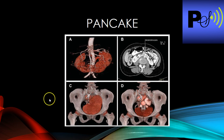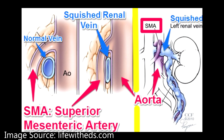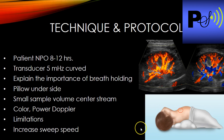The indications for the exam include hypertension — renal vascular hypertension being number one — abdominal bruit heard on physical exam, known renal artery stenosis for follow-up, elevated BUN and creatinine, and renal failure. We're also getting many patients to rule out nutcracker syndrome, where the SMA collapses and compresses the left renal vein, causing obstruction and sometimes hematuria.